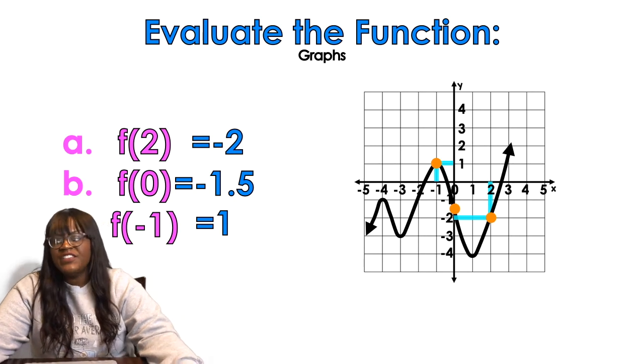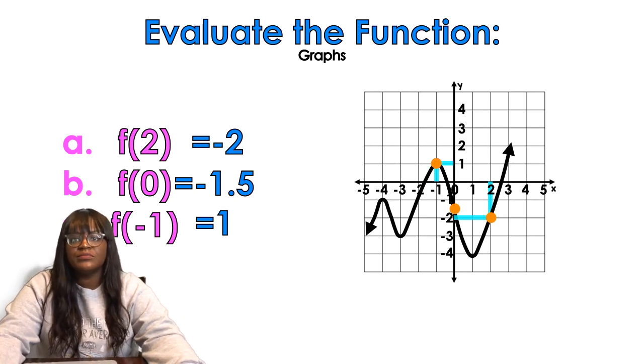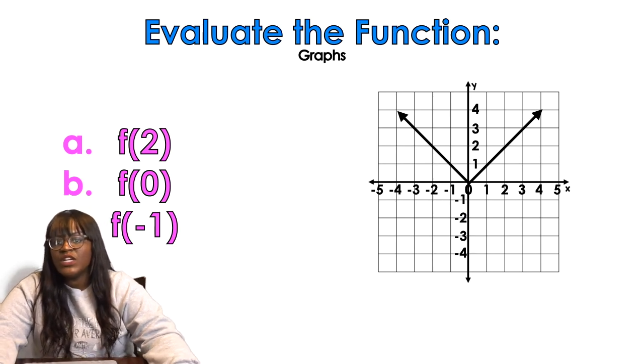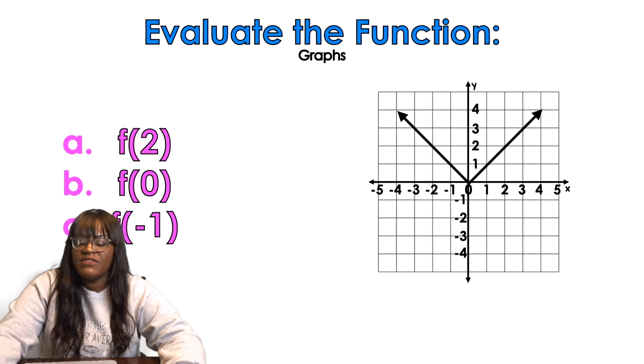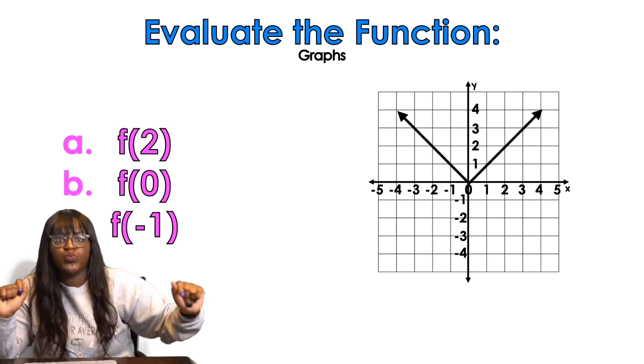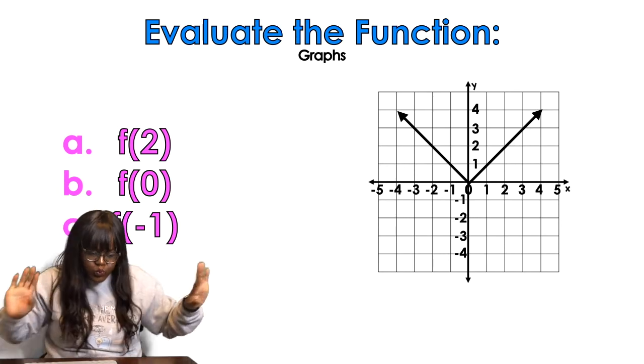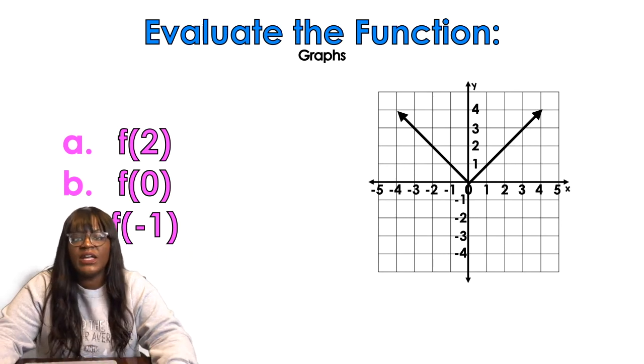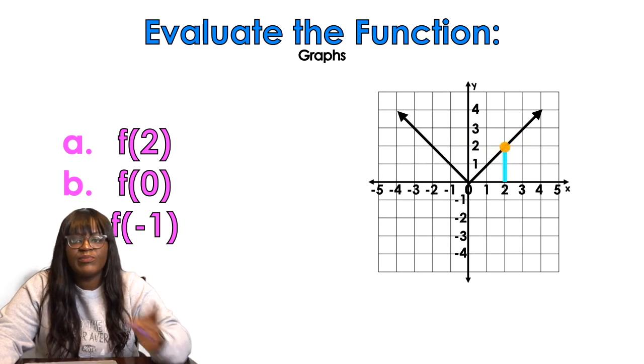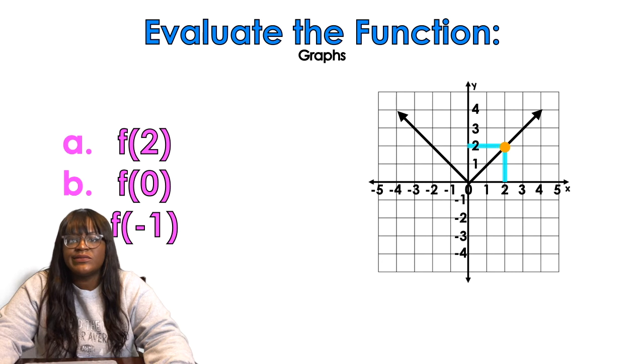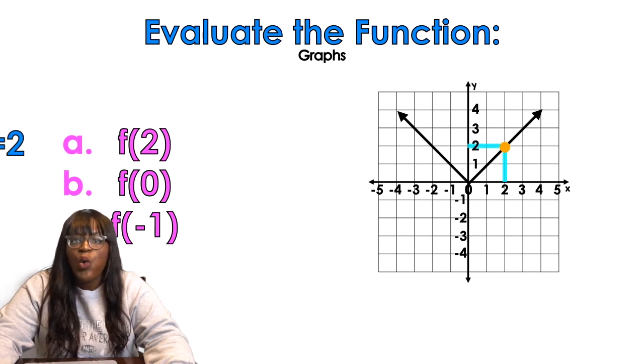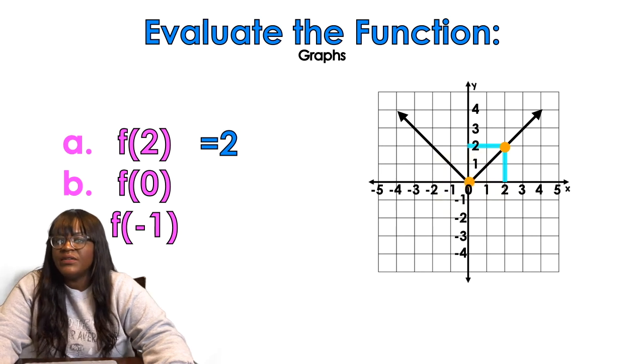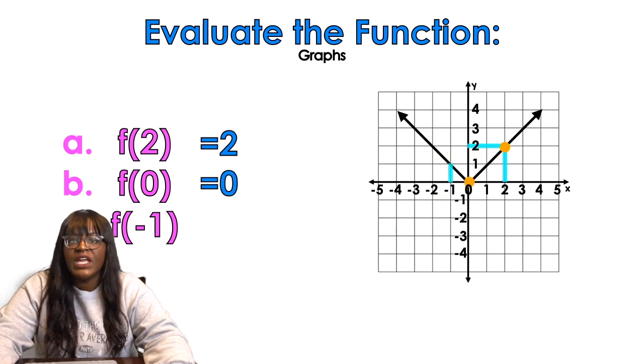So now I want you to try the same thing for the next graph. Try to figure out what f(2) is, what f(0) is, and what f(-1) is. You should pause the video. Okay, hopefully you paused. So when I plug in 2, guess what I'm going to get? 2. When I plug in 0, it's still going to be 0. And then when I plug in negative 1, woohoo! I'm going to get 1. That was so easy.